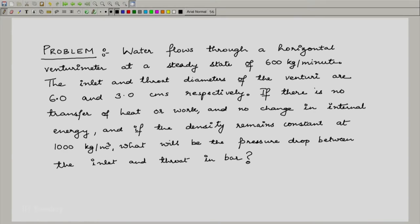Water flows through a horizontal venturimeter at a steady state of 600 kilograms per minute. The inlet and throat diameters of the venturi are 6 and 3 centimeters respectively. If there is no transfer of heat or work and no change in internal energy, and if the density remains constant at 1000 kilogram per meter cube, what will be the pressure drop between the inlet and throat in bar?